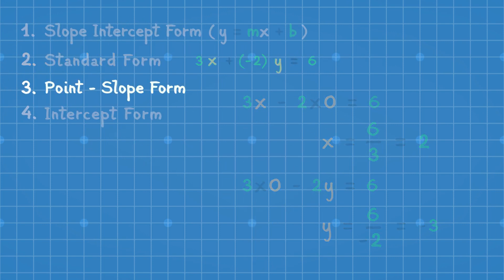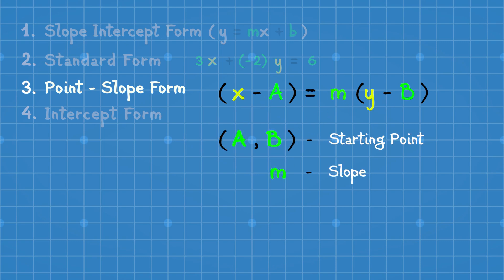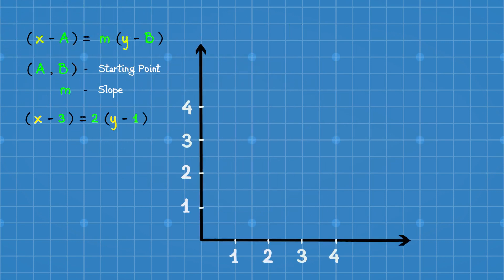Moving on, the third form of linear equation is point-slope form. It is represented as y - b = m(x - a), where (a, b) gives the starting point and m tells the slope of the line. For example, here (3, 1) gives the starting point and 2 becomes the slope of the line. Since we've got a starting point and slope, we graph the point and slope form of linear equation like we did it for slope-intercept form.